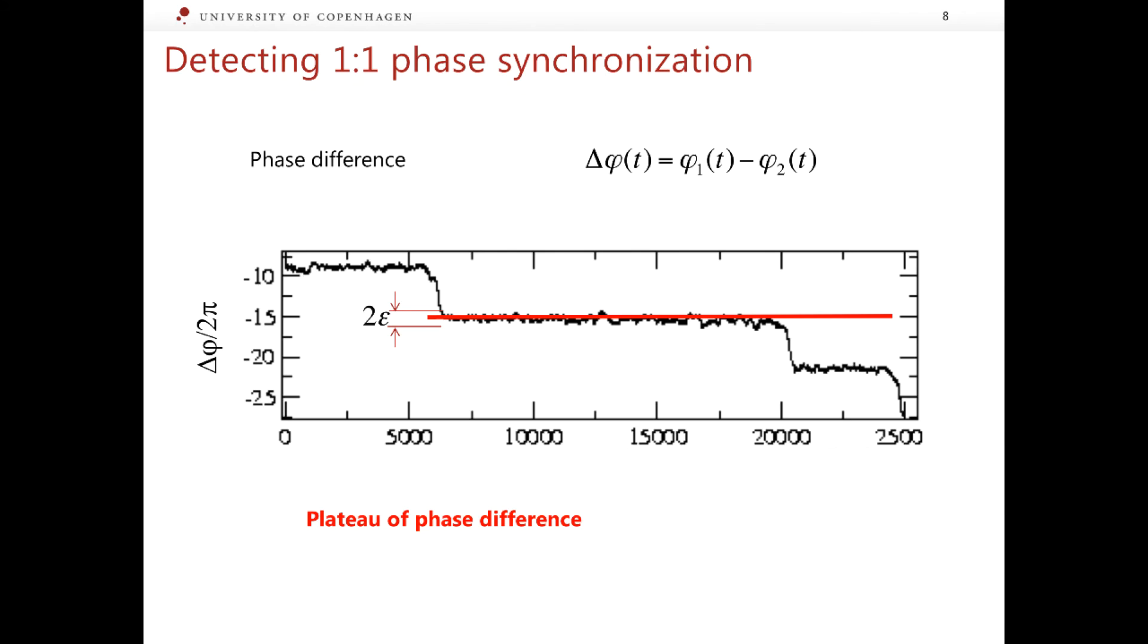Mathematically, the condition for the existence of the plateau can be described by the following inequality which basically says that the distance between the phase difference and a certain constant c should be smaller than some number epsilon multiplied by 2π. Note that epsilon should be a reasonably small number and it is usually chosen to be less than a half.